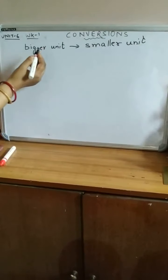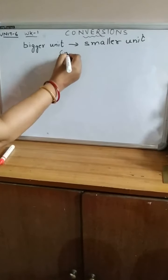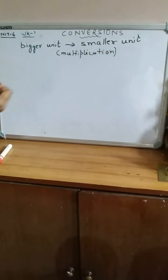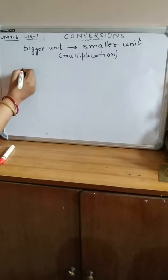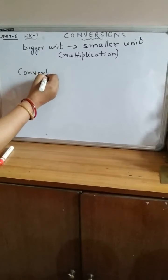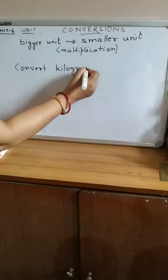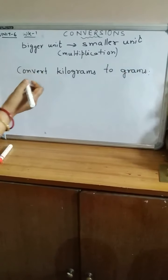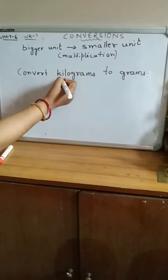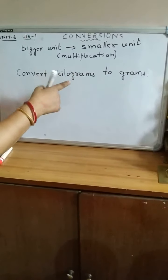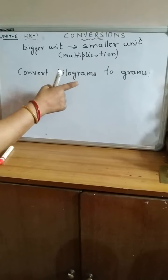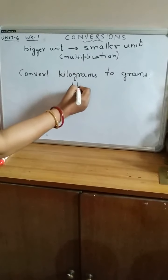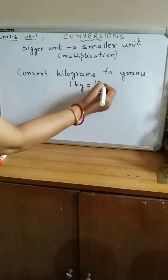When we are converting from a bigger unit to a smaller unit, we use the multiplication operation. Here I am going to show you how to convert from kilograms to grams. Kilogram is the greater unit and gram is the smaller unit. All of you know that 1 kilogram is equal to 1000 grams.